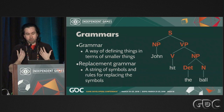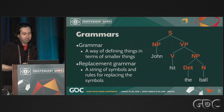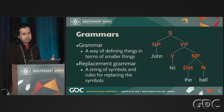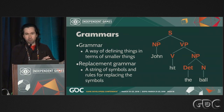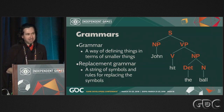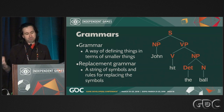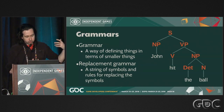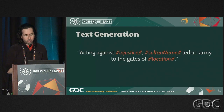First, a quick crash course on grammars. The simplest way to put it: grammars are a way of defining things in terms of smaller things. A replacement grammar is a string of symbols and rules for replacing those symbols — in our case with either text or with other symbols that themselves have rules that can be replaced with text. We can think about English sentence structure: a sentence is made up of a noun phrase and a verb phrase. A noun phrase can be a proper noun like 'John'; a verb phrase is a verb plus a noun phrase. The verb could be 'hit'; the noun phrase has a determiner 'the' and a noun 'ball.' So we get a sentence like 'John hit the ball.'